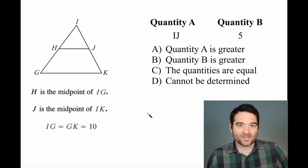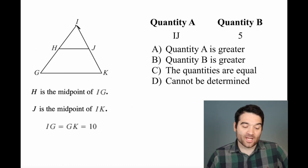Here's a GRE quantitative comparison question. Let's take a look. So we have this triangle right here, GIK,